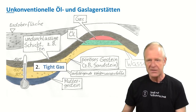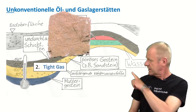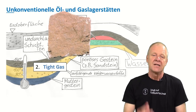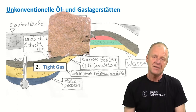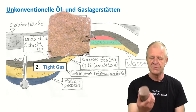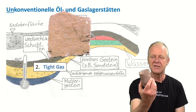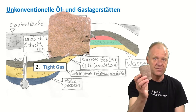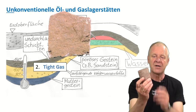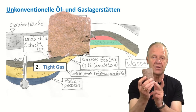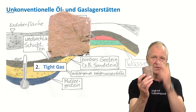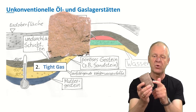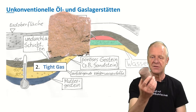The second deposit we can find here is called tight gas. Sometimes the pores of the sediment rocks are so small and tight that oil has no chance to move. But gas is much more flexible and attempts to move to the surface. However, if the flow paths get narrower, the gas finally gets stuck — and that's what we call tight gas.